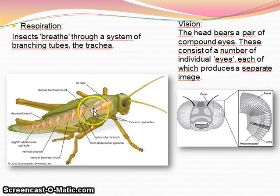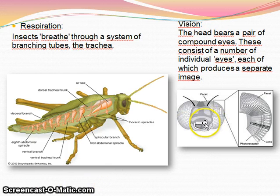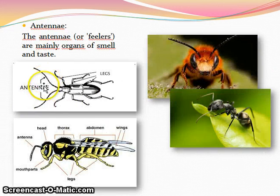Vision. The head bears a pair of compound eyes, which consist of a number of individual eyes, each of which produces a partial image. Hence, the overall picture that the insect sees is made up of a series of dots. Antennae. The antennae are mainly organs of smell and taste, though they may have other functions in certain insects.